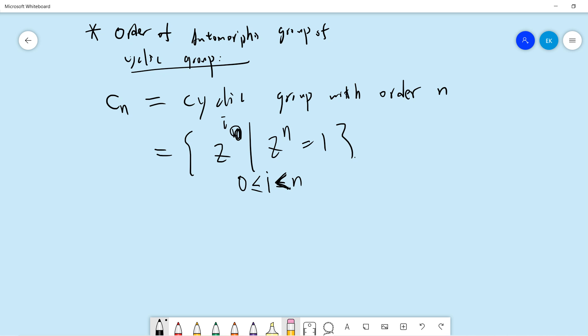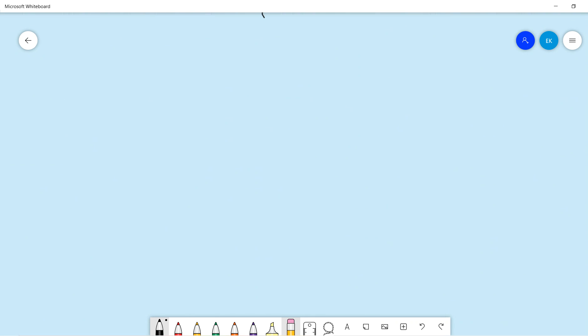This is just a simple realization. Now we want to calculate the automorphism group. The automorphism group for G is the homomorphisms from G to G which are isomorphisms. The automorphism group is also a group.